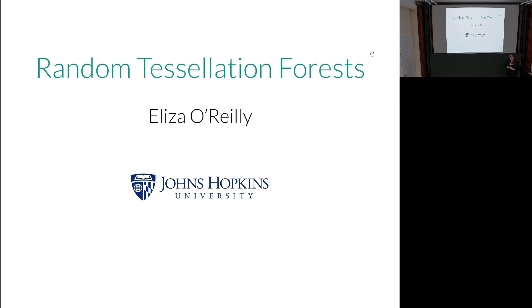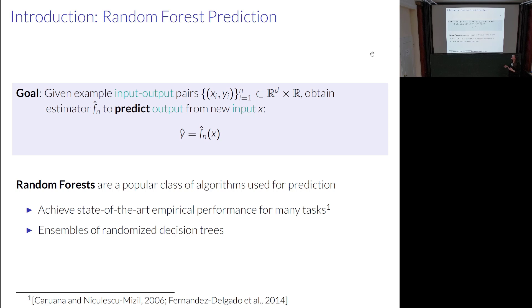I'm going to talk today about an application of geometry, specifically random tessellations in statistical learning theory. The motivation comes from random forest prediction. The problem setting is: we're given example input-output pairs, and we want to obtain some estimator that will predict an output from some new input x. This includes regression and classification. Random forests are a popular class of algorithms for performing this task.